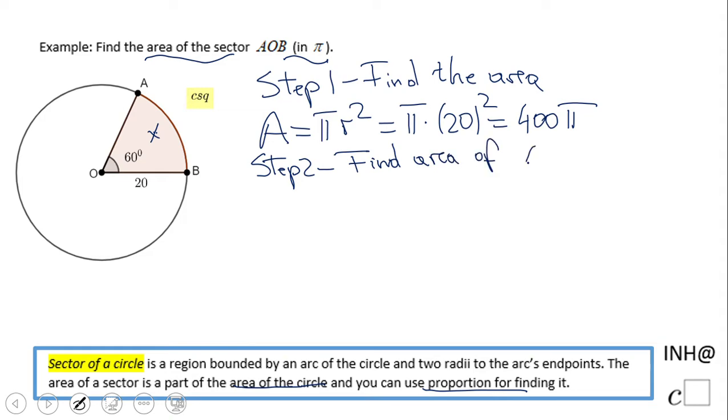We'll use proportion. Let's take a look here. If I go around the circle, that means 360 degrees, and that is gonna give me this whole area, right, the whole thing, 400π.